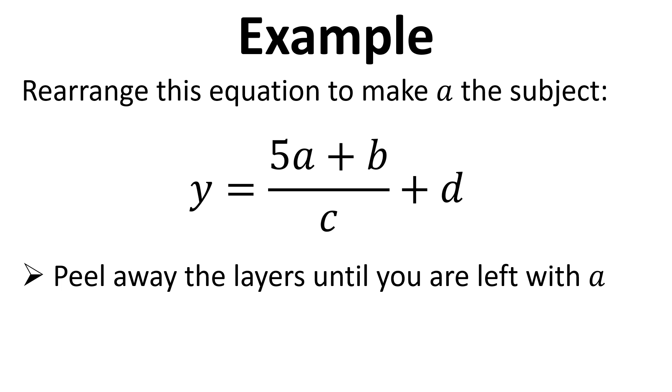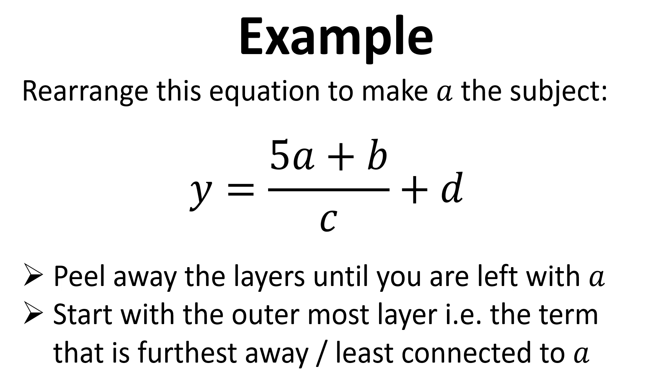The key to doing this is to think about rearranging the equation as peeling away layers until we're left with the variable that we want to be the subject, which in this case is A. And we start with the outermost layer, so that's the term that is furthest away or least connected to A.